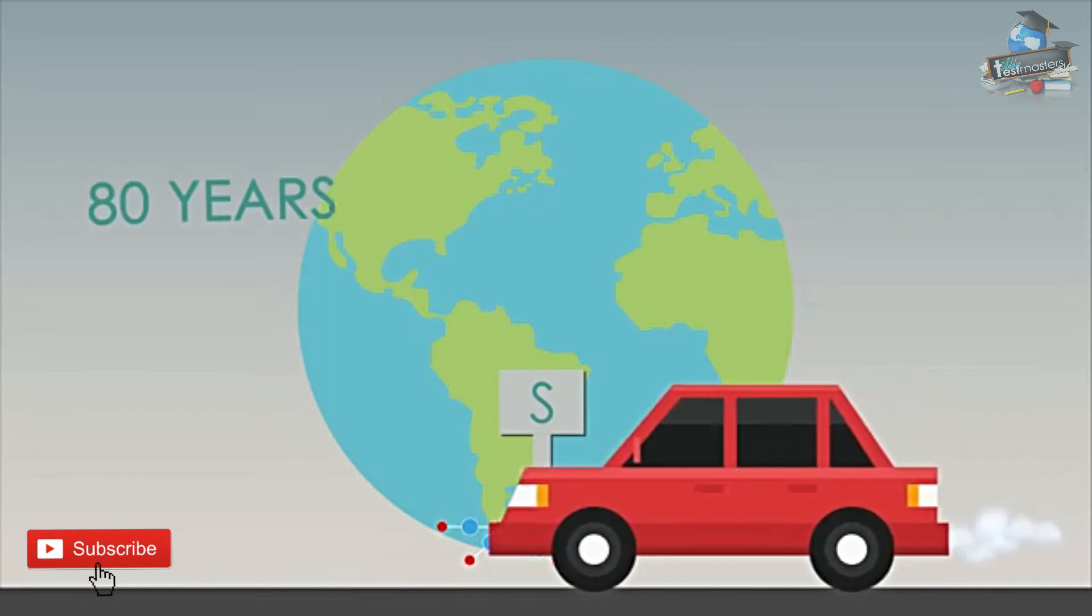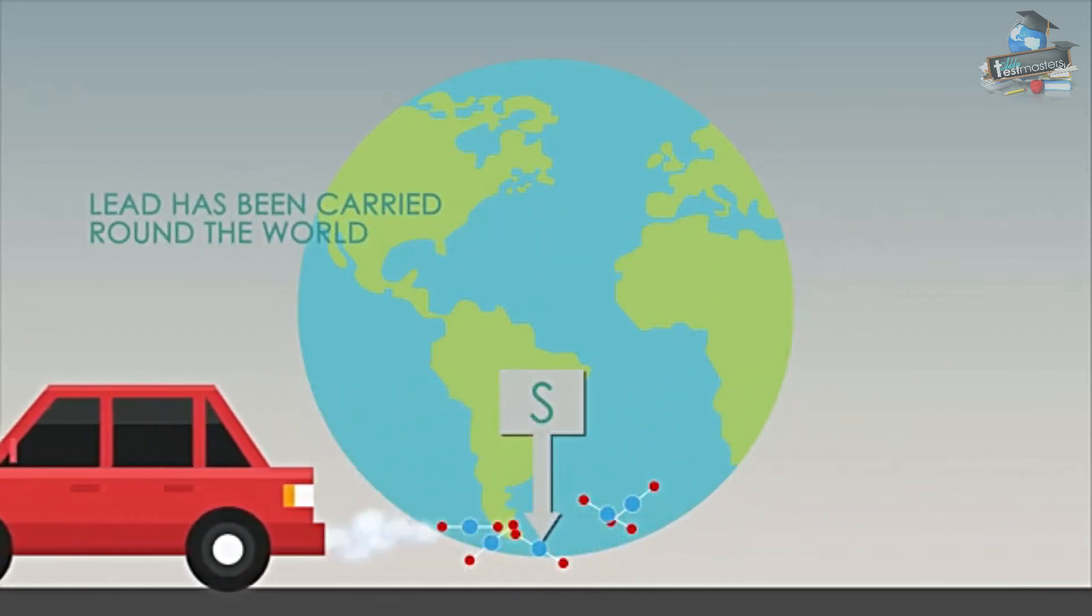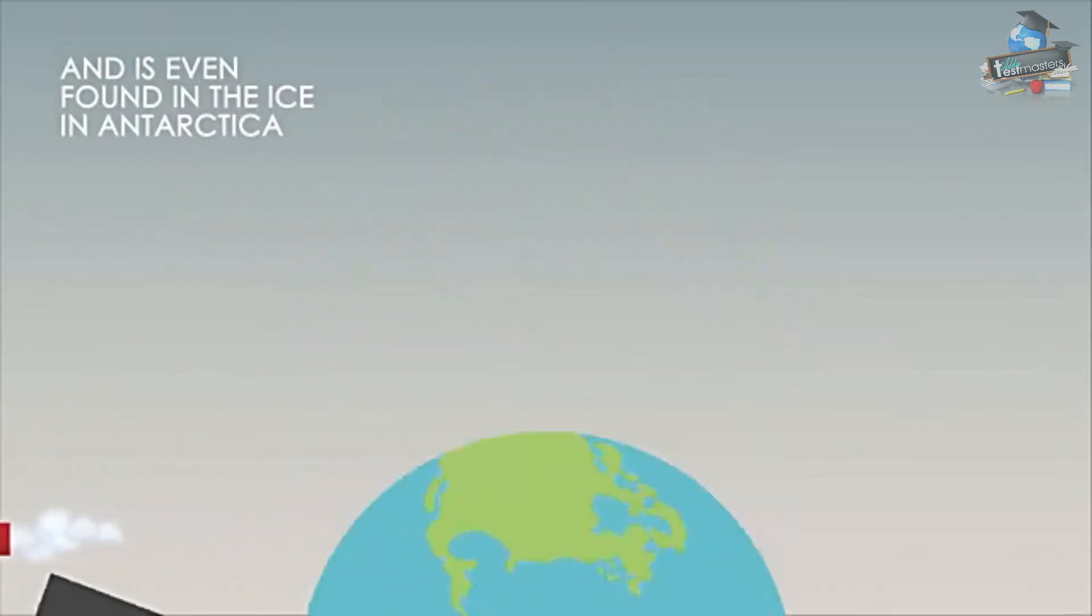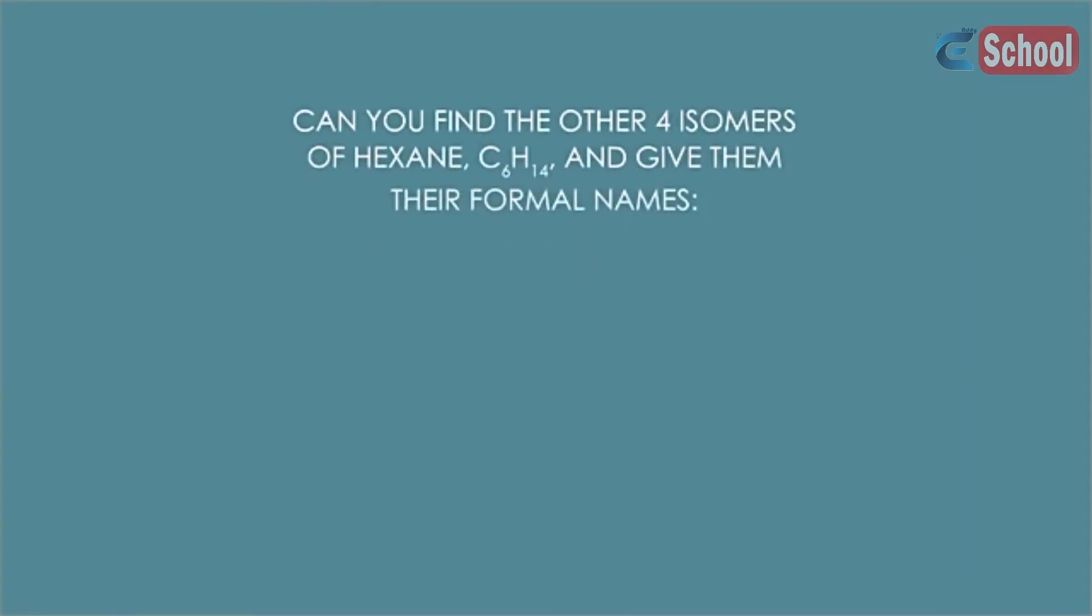It has taken us until this 21st century to get rid of all the lead in petrol globally. But for 80 years, lead from car exhausts has been carried around the world and is even found in the ice in Antarctica.